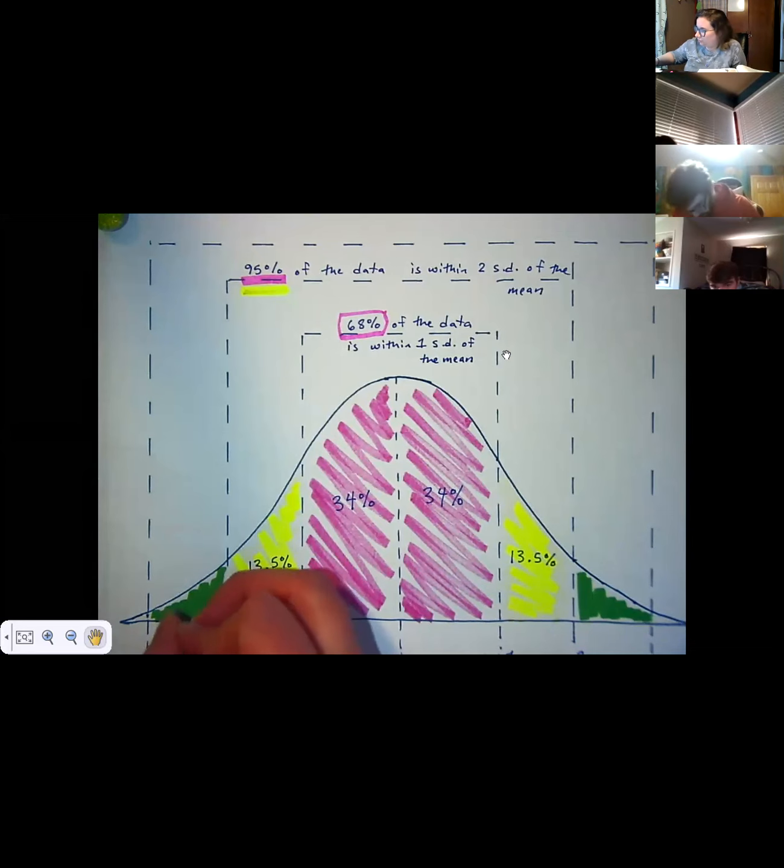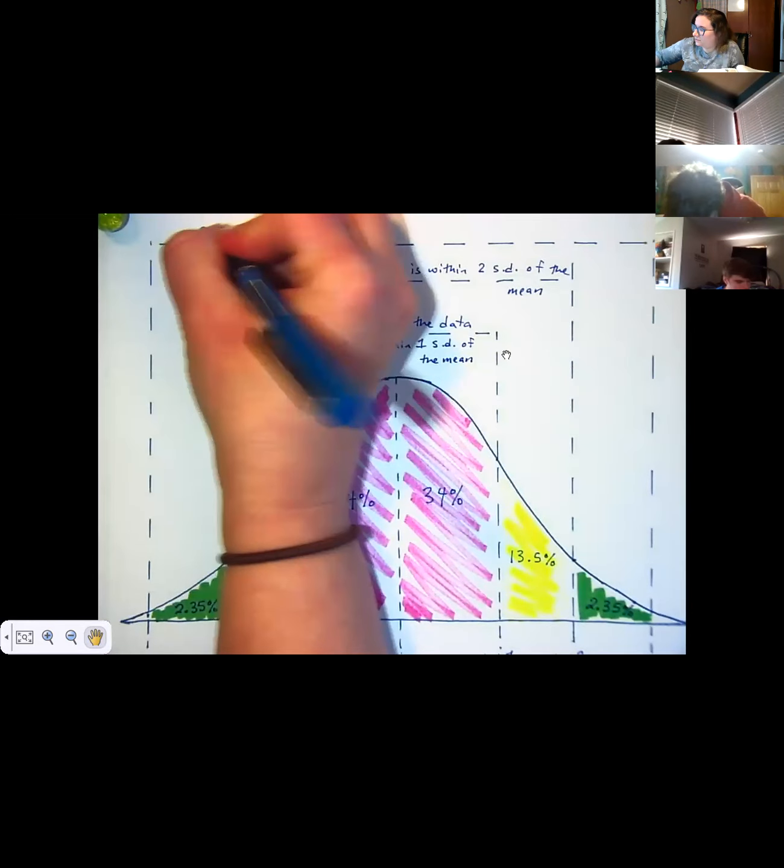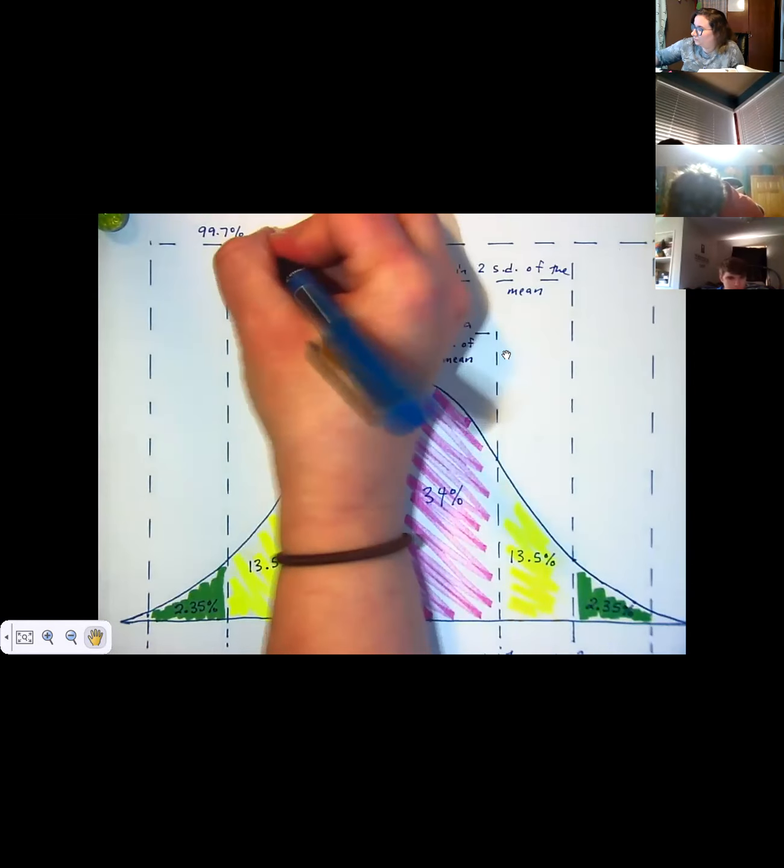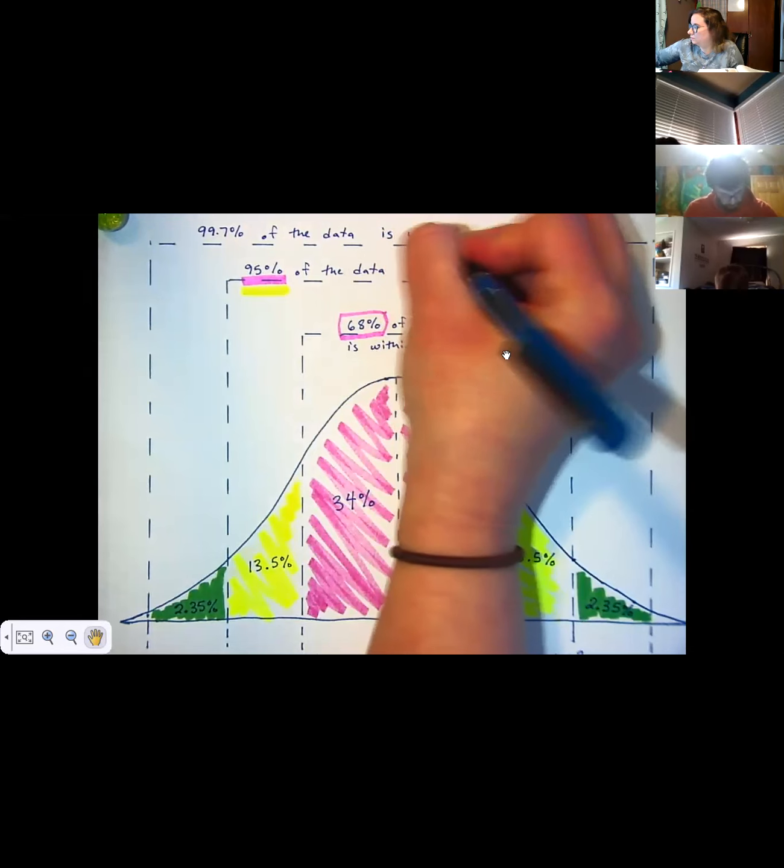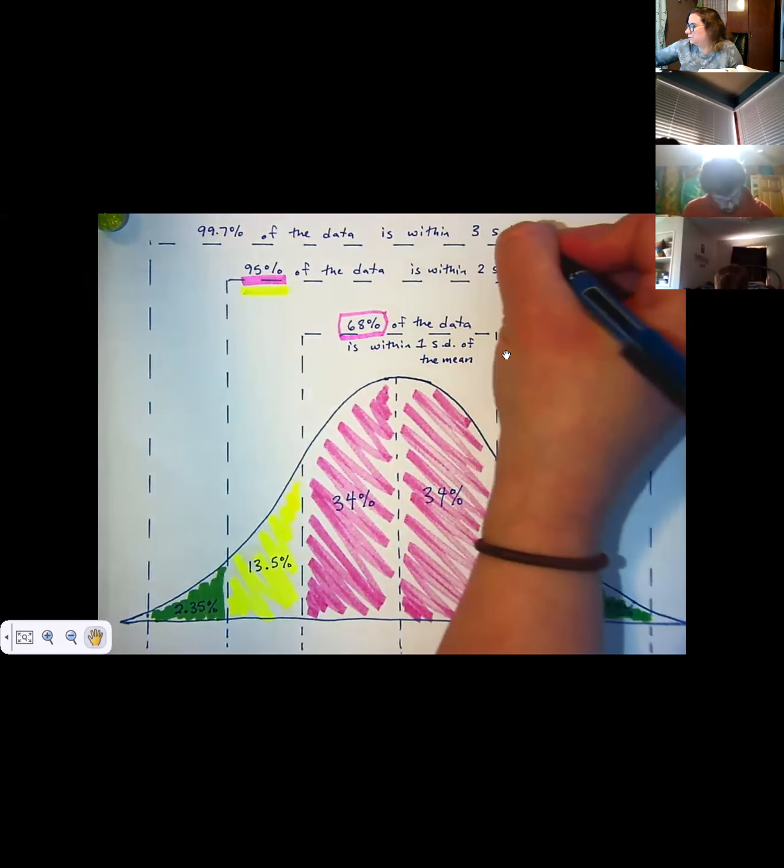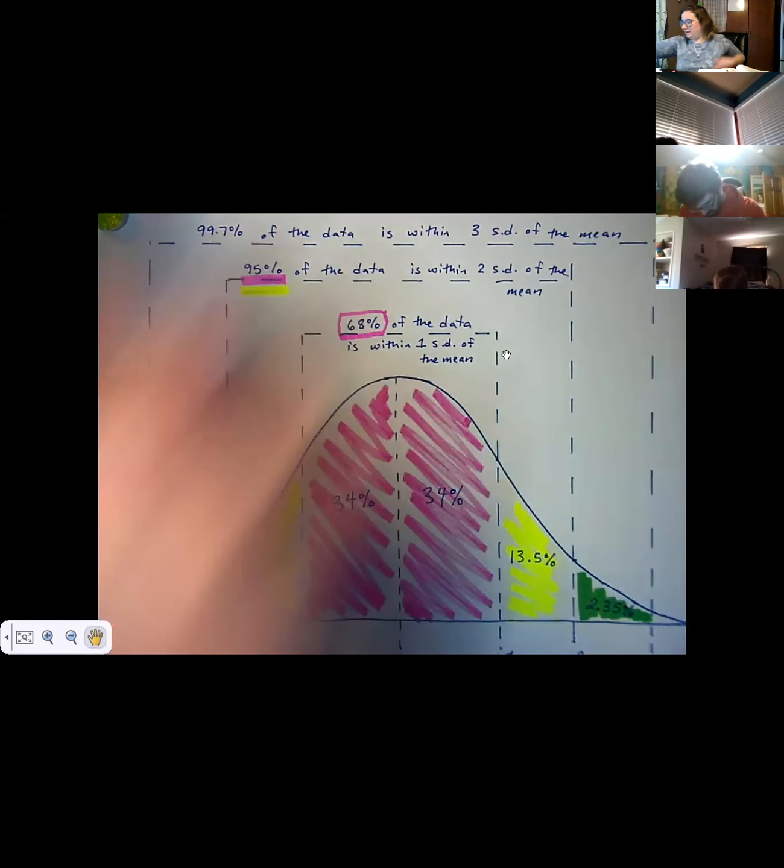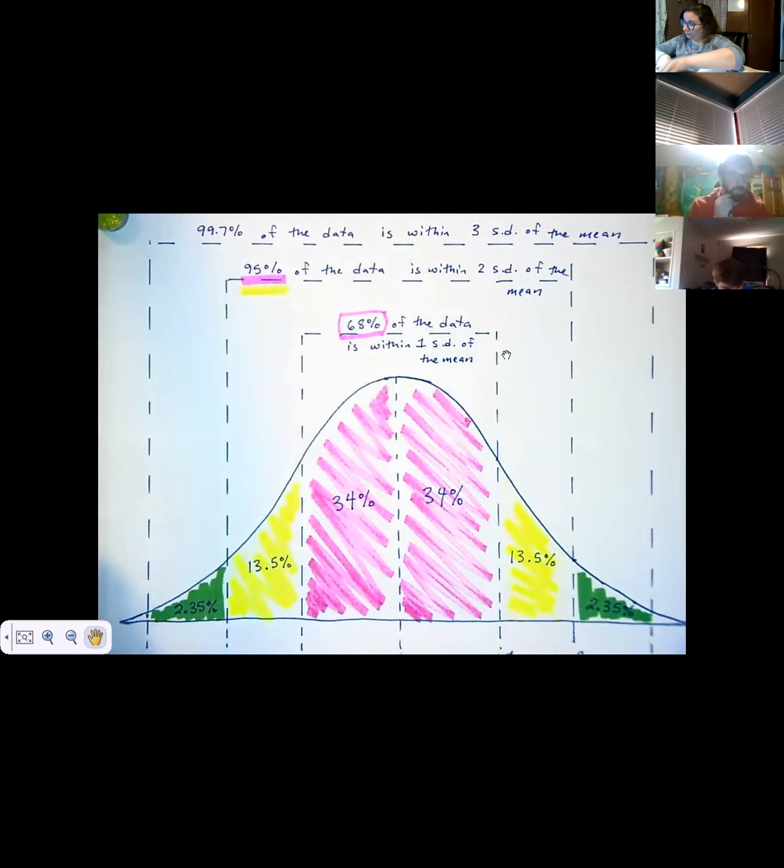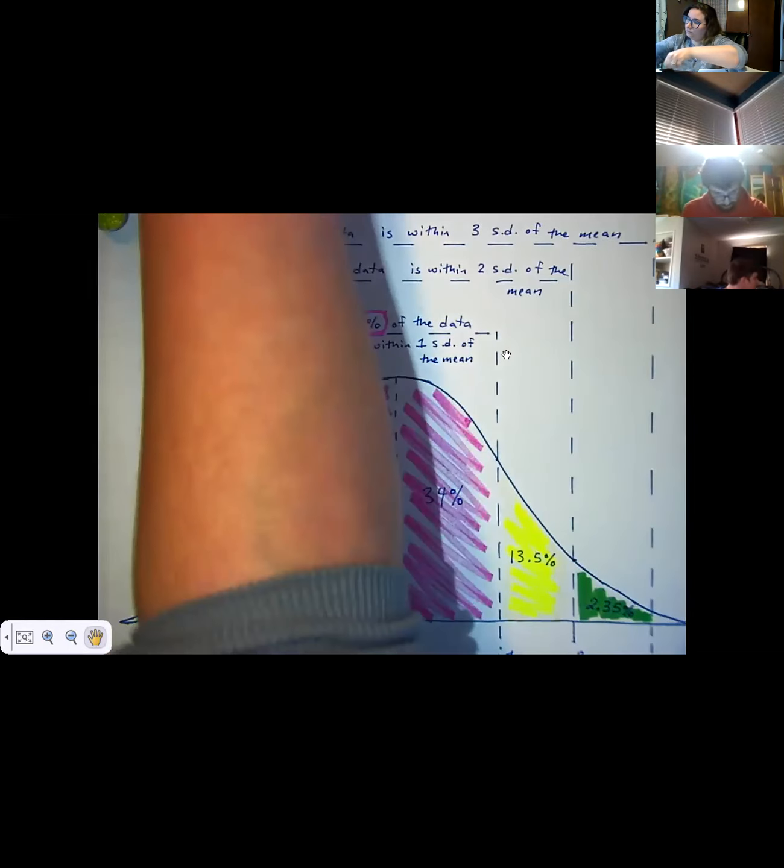And then finally out here in the weirdos, we've got 2.35% and 2.35% here. And that is 99.7% total of the data is within three standard deviations of the mean. And that for me is made up of pink and yellow and green now.